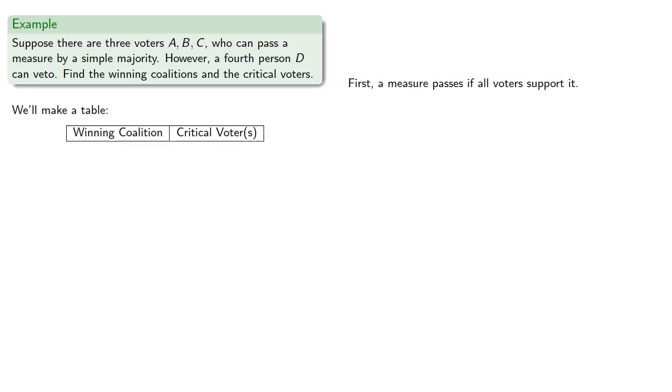So first, a measure passes if all voters support it. So that's the winning coalition A, B, C, and D.